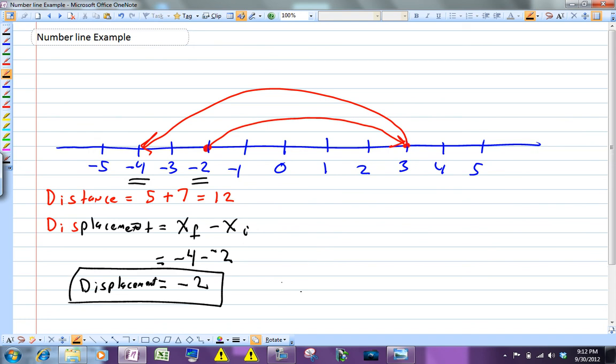So distance versus displacement. Distance is the actual path length traveled, how far you went, whereas displacement is where you end up compared to where you started, your net change in position.